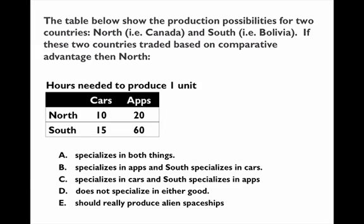Finally, let's do trade. The first question reads: the table below shows the production possibilities for two countries — North, which could be possibly Canada, and South, which could be maybe Bolivia. If these two countries traded based on comparative advantage, then North would do what? To answer any of these questions, the first thing you need to do is calculate the opportunity cost. As long as you calculate the opportunity cost correctly, you should be able to answer most of the questions without any major difficulties.